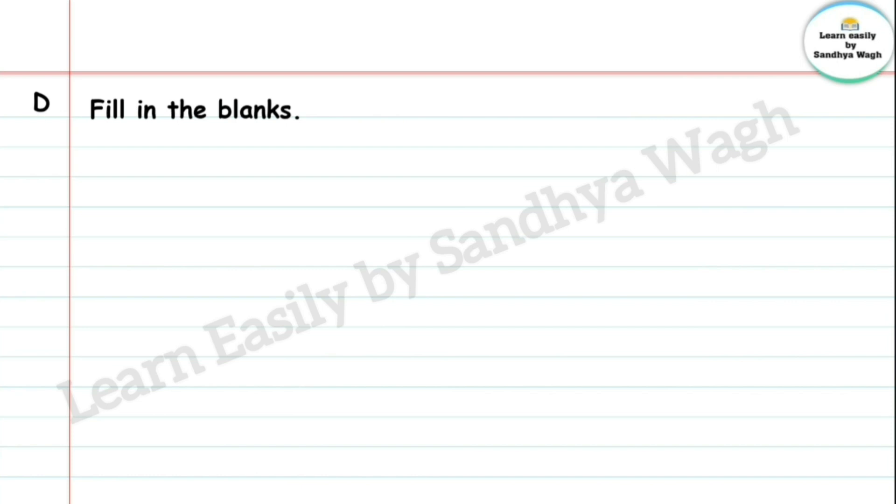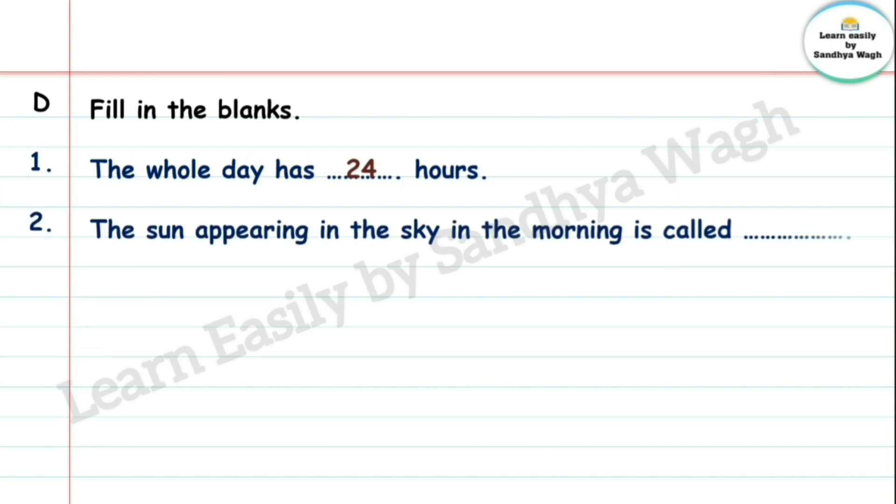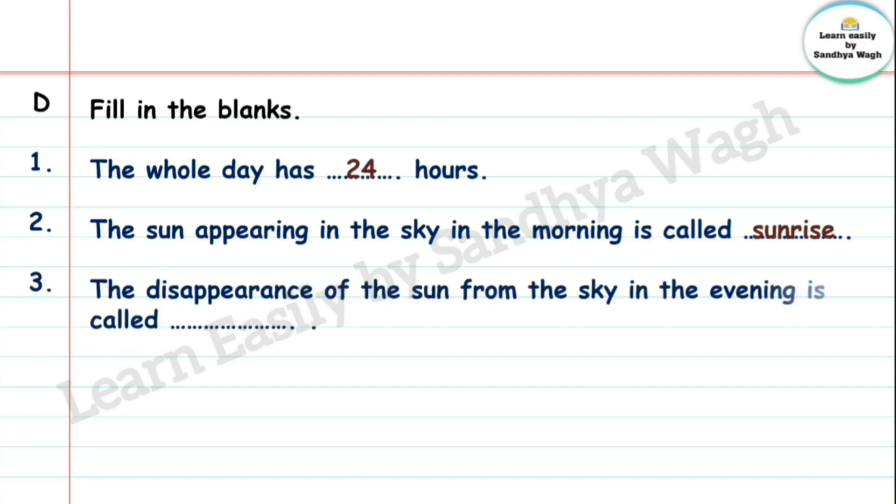D. Fill in the blanks. 1. The whole day has dash hours. Eka puruna divasamad he kiti aar sasthat. 24. 2. The sun appearing in the sky in the morning is called Sunrise. Sun jewha ugauto. Surya jewha ugauto Morning la sakali. Tewha talakaya manta. Sunrise. 3. The disappearance of the sun from the sky in the evening is called sunset.